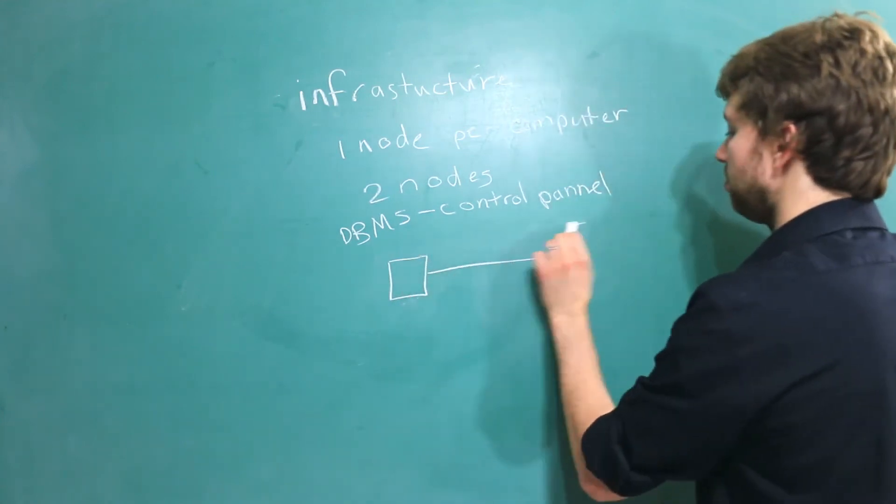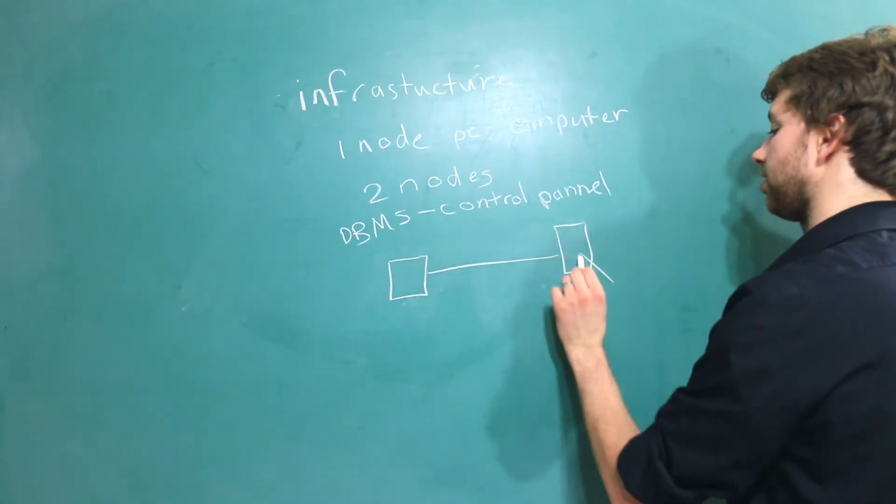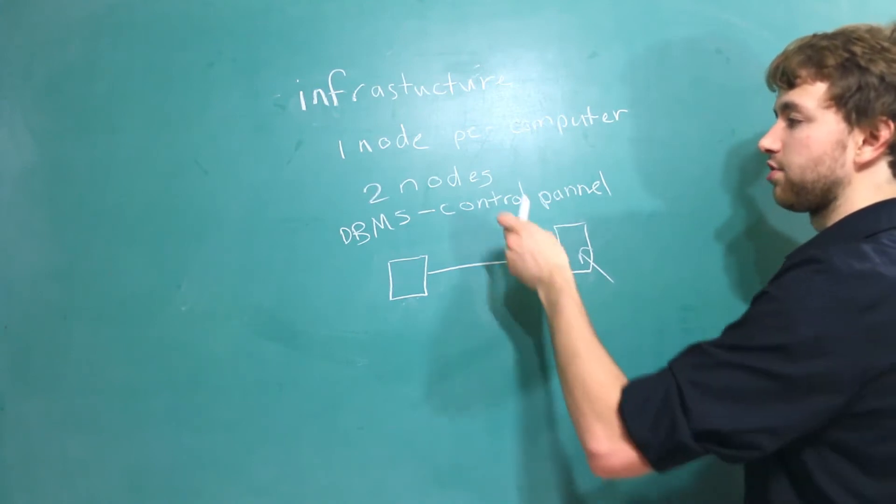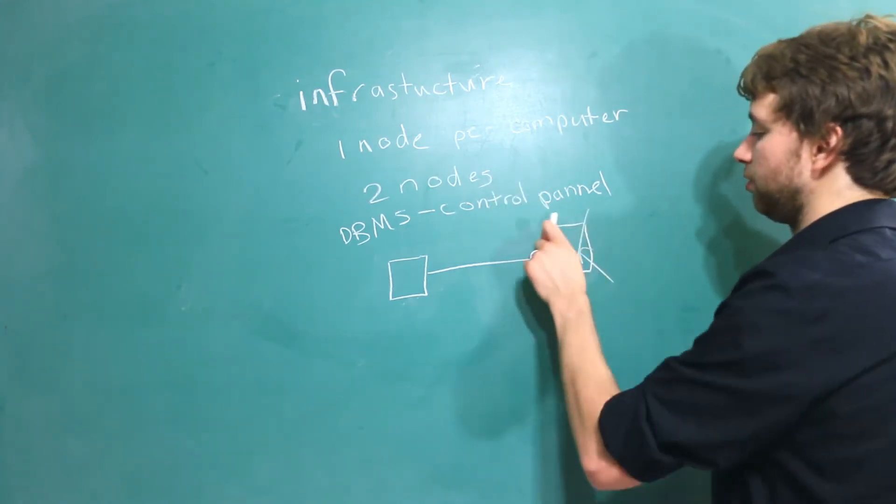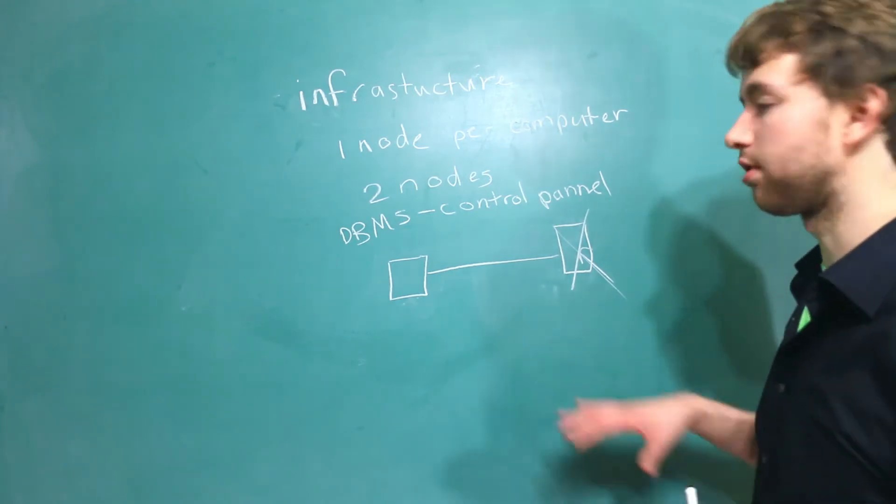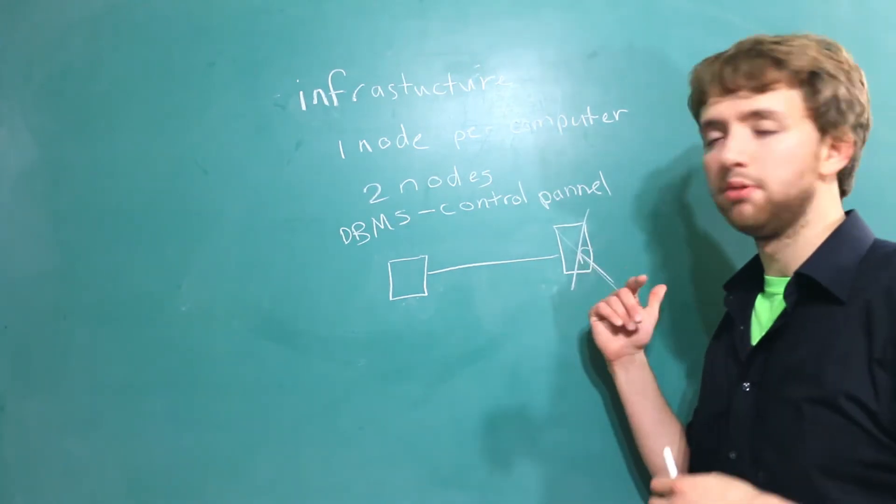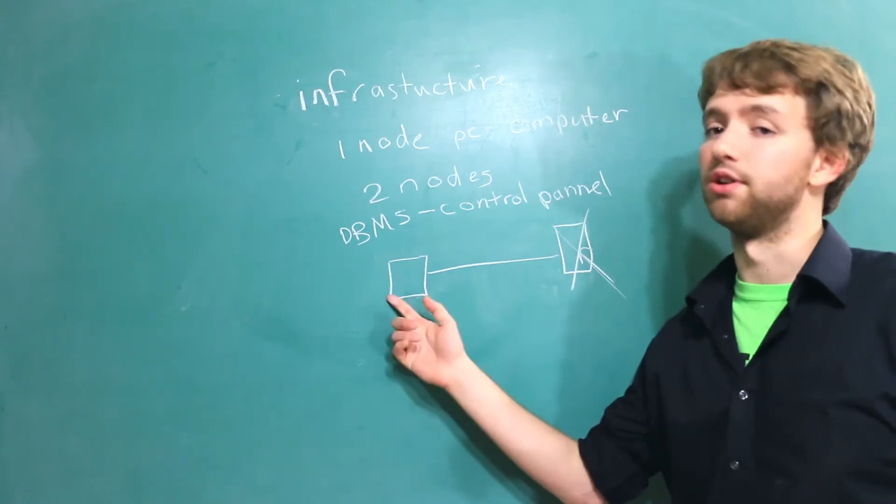The reason we are installing this database management system on a computer by itself is for this reason. If we draw out these two nodes and let's say this is the control panel, and for some reason this database node has a problem and we lose access to it, well now not only do we lose access to that node, but also our control panel which gives us access to this node.